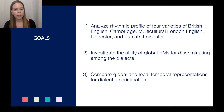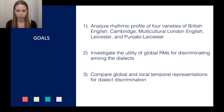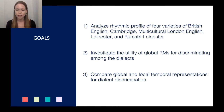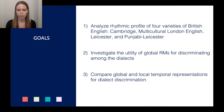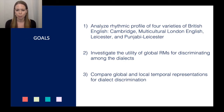The goals for this talk are: one, to analyze the rhythmic profiles of four varieties of British English — Cambridge Multicultural London English, Leicester, and Punjabi Leicester English; two, to investigate the utility of global rhythm metrics for discriminating among these dialects; and three, to compare the performance of global and local temporal representations for dialect discrimination. Basically, is rhythm useful in dialect discrimination, and how much are automatic speaker recognition systems missing out without global temporal representations?